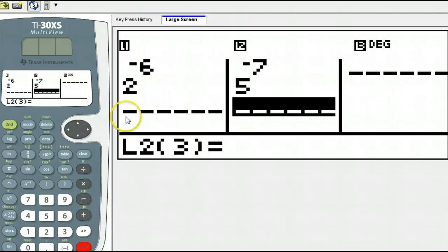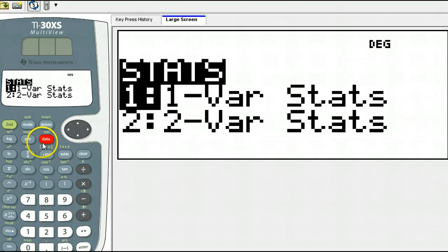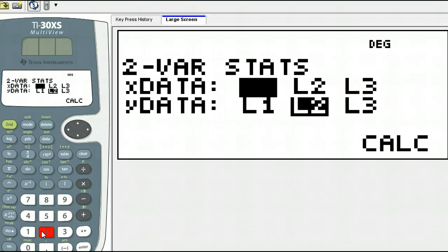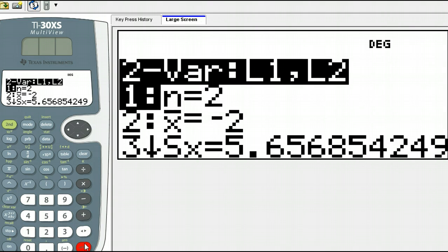So linear regression will find the equation of a line through two or more points. And you can do that by doing second data. And we want to pick two variable statistics. So you can either scroll down to 2 and hit ENTER or you could have just hit the number 2. This is good for what we want, so just hit ENTER a few times till you get to here.